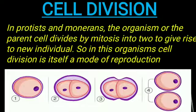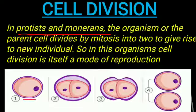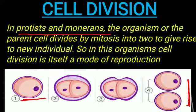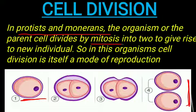Next is cell division. Here we are basically talking about Protista and Monera kingdoms. Members of Protista and Monera are unicellular — they are single-celled organisms. These organisms divide and eventually produce two cells. Those two cells are two new organisms. In these organisms, cell division is the only mode of reproduction. The organism or the parent cell divides by mitosis into two to give rise to new individuals, so cell division is itself the mode of reproduction.